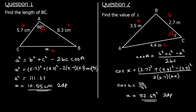So that's the cosine rule. We use a squared equals b squared plus c squared minus 2bc cos A to find a length when we know two lengths and the angle between them. Or we use the rearranged version — cos A equals b squared plus c squared minus a squared all over 2bc — to find an angle when we know all three lengths.